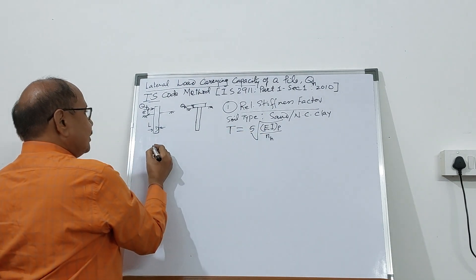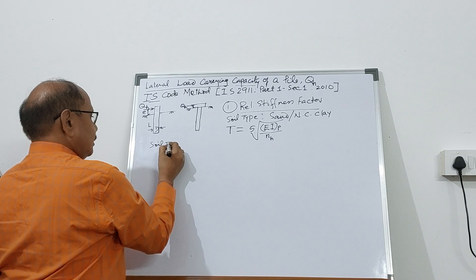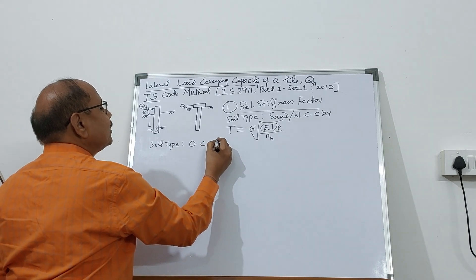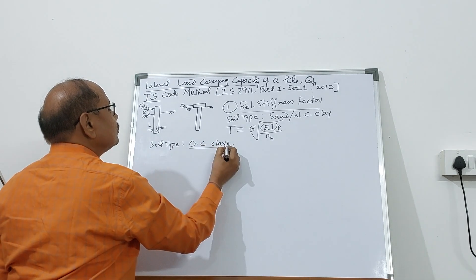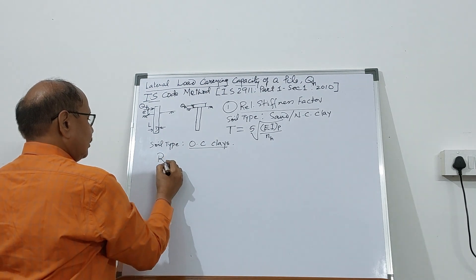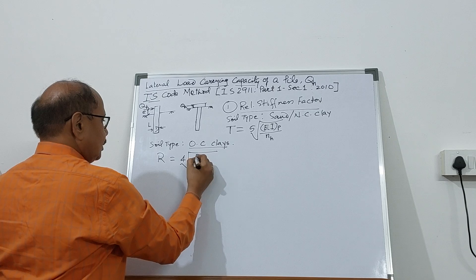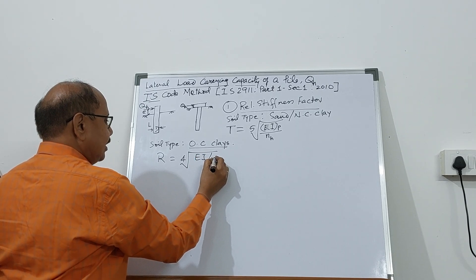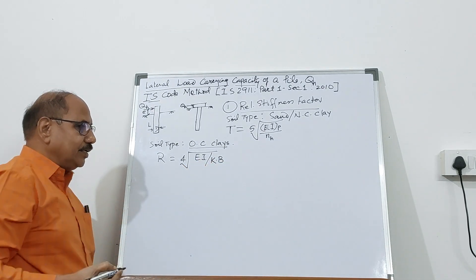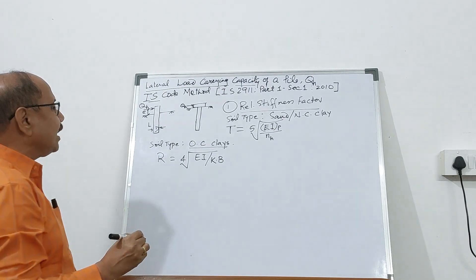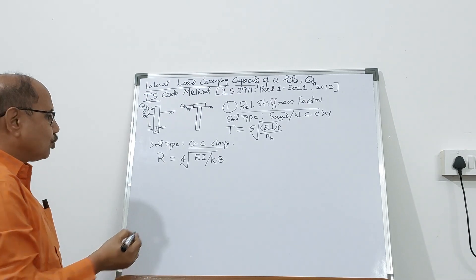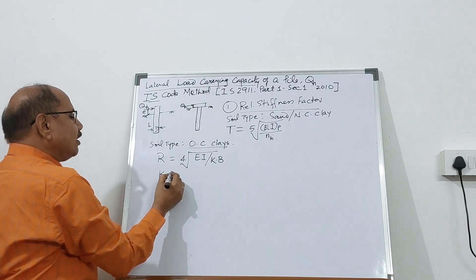If the soil type is over-consolidated or pre-consolidated clays, then you will have to find out the relative stiffness factor R, where R will be the fourth root of EI of pile material divided by the modulus of subgrade reaction K into B, where B is the lateral dimension of the pile. Here the lateral dimension is D, so this formula is to be used.